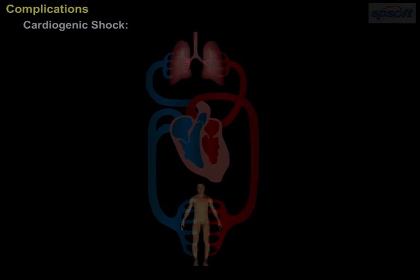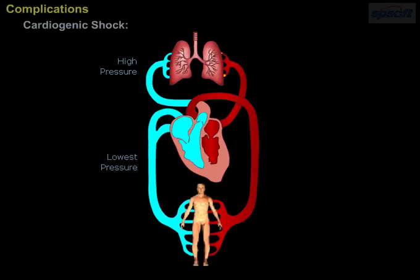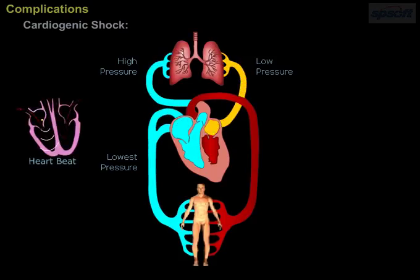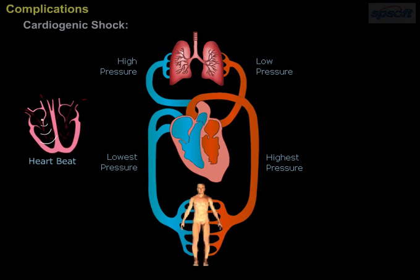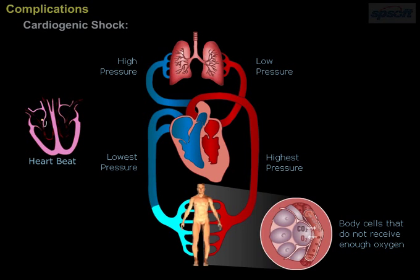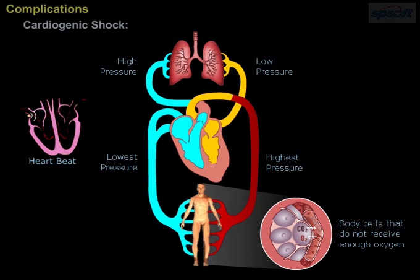Cardiogenic shock. Ventricles are not able to pump blood to body tissues and organs. This condition leads to cardiogenic shock. In such a shock, the body cells that do not receive enough oxygen stop functioning.